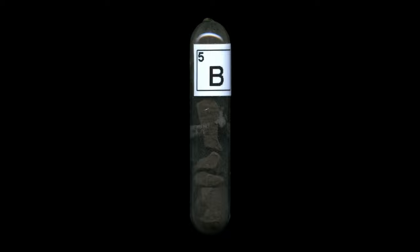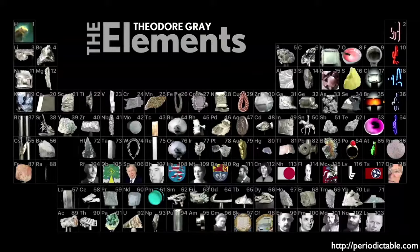I have a sample of boron right here in this glass vial. This is the brown form of boron. It's a little hard to see, so let's take a look at it a little bit closer. I put it on my scanner for you. This is again the amorphous form of boron. We'll discuss that a little bit more later.